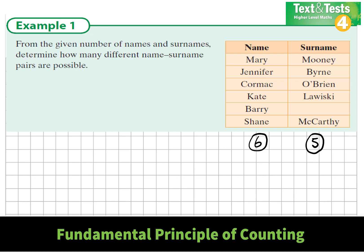So according to the fundamental principle of counting, our number of options would be 6 times 5, which is equal to 30. So there's 30 different names you could make out of this.